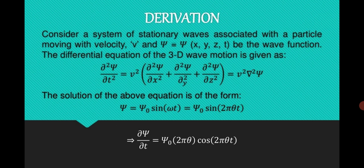Now for its derivation: consider a system of stationary waves associated with a particle moving with velocity v. So ψ is the function of space and time — the wave function. The differential equation of three-dimensional wave motion is given by ∂²ψ/∂t² = v²(∂²ψ/∂x² + ∂²ψ/∂y² + ∂²ψ/∂z²), which equals v² ∇²ψ, where ∇ is the del operator.